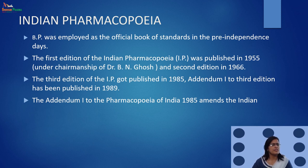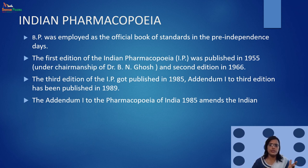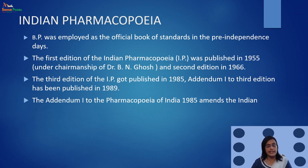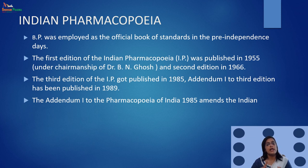The second edition had many drugs, crude drugs, and their preparations. The third edition was published in 1985. So: first edition in 1955, second edition in 1966, third edition in 1985, and the first addendum to the third edition was published in 1989.